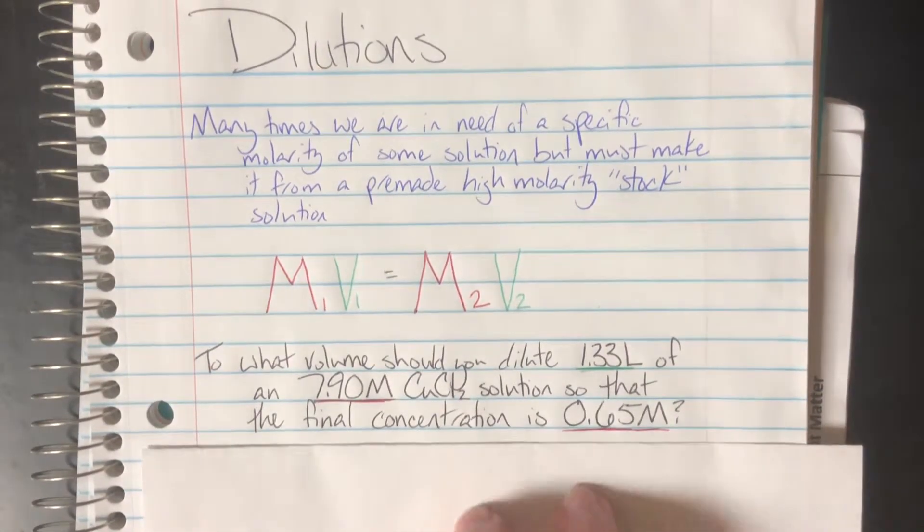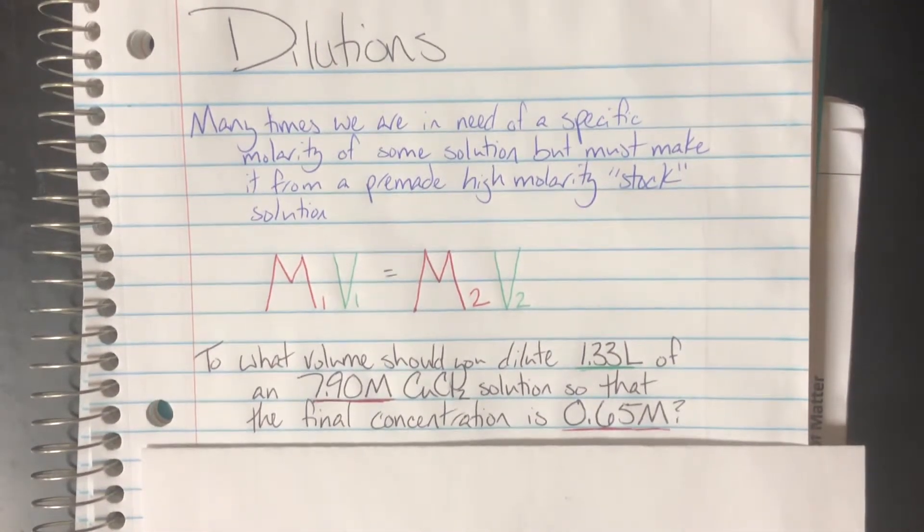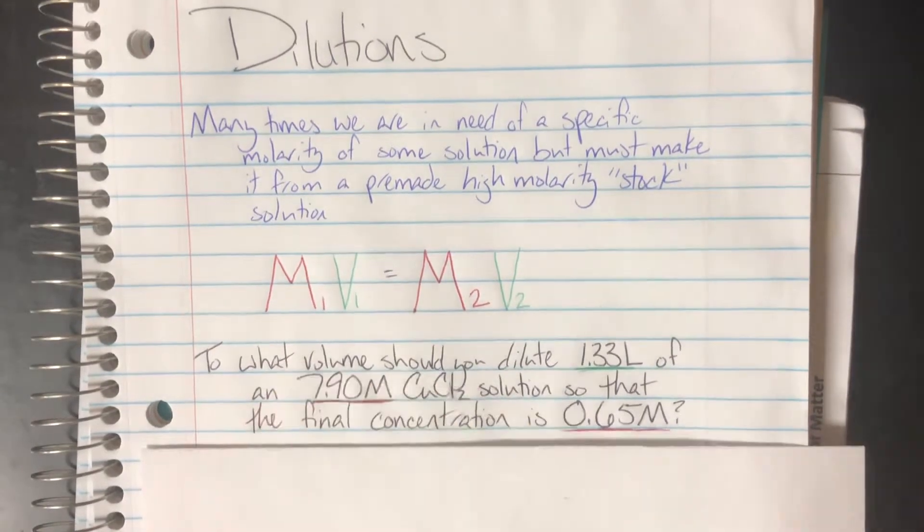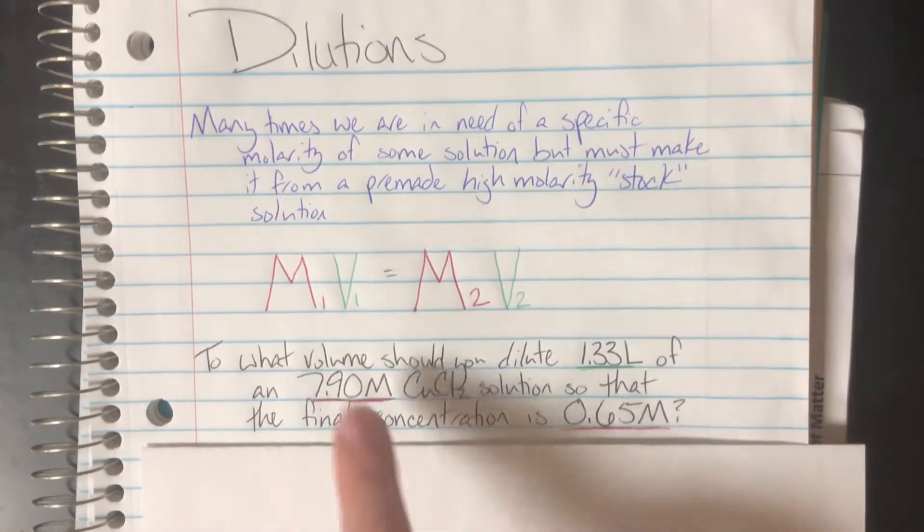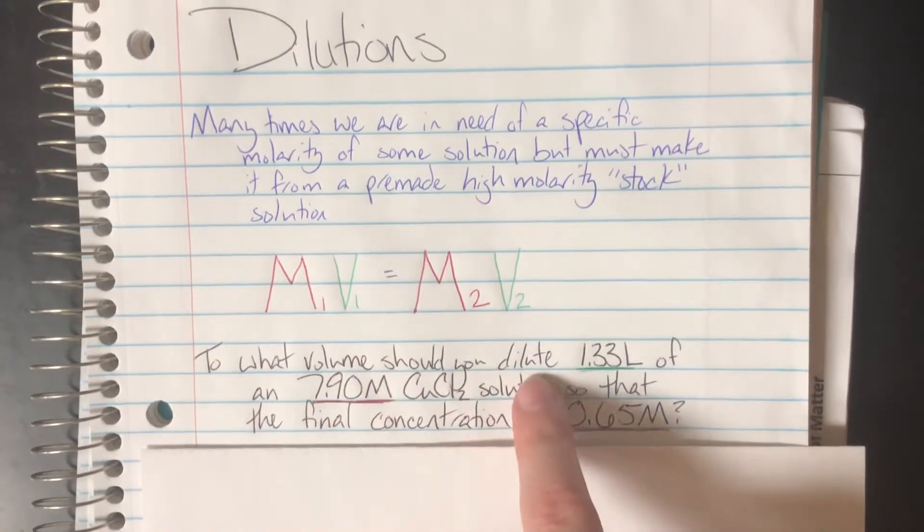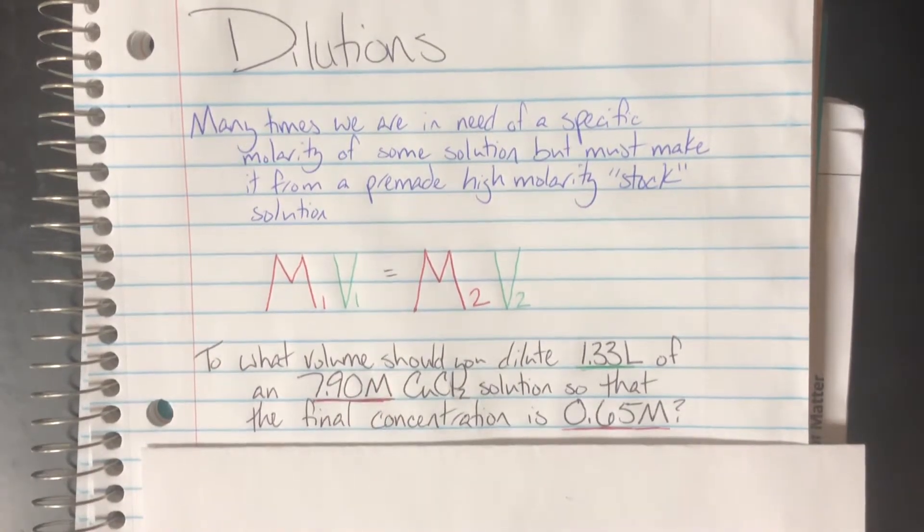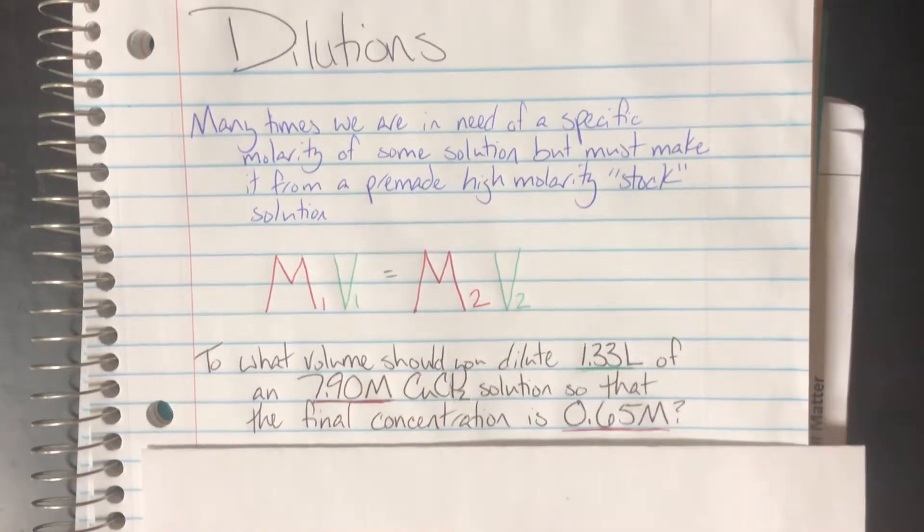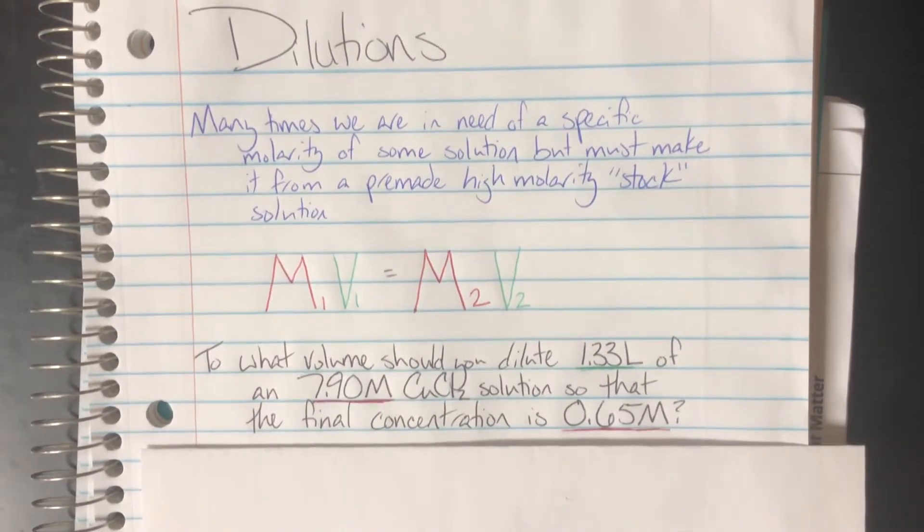Here is an example problem. To what volume should you dilute? So we know that the question word is attached to the volume, and we know that it is going to be the post, my after volume, because I am going to dilute to that volume. So that means I don't know my V2.